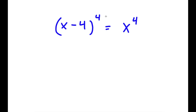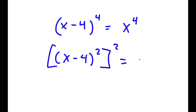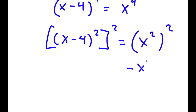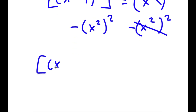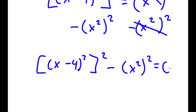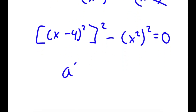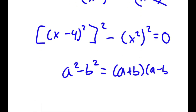In this problem, I have x minus 4 to the power of 4 is equal to x to the power of 4. I'm going to rewrite this as x minus 4 squared to the power of 2 equals x squared to the power of 2. I'll subtract x squared to the power of 2 from both sides, leaving x minus 4 squared to the power of 2 minus x squared to the power of 2 equals 0. Using the difference of squares formula, a squared minus b squared equals a plus b times a minus b.